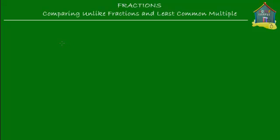Welcome to homecampus.com.sg. This is part 2 of the chapter on comparing unlike fractions and least common multiple. In the previous lesson, one of the methods to convert unlike fractions to like fractions is to simply multiply the denominators.